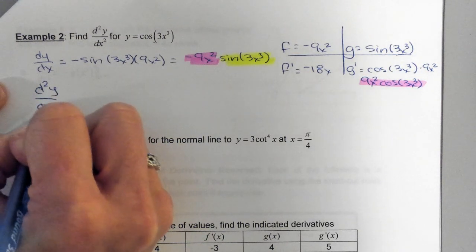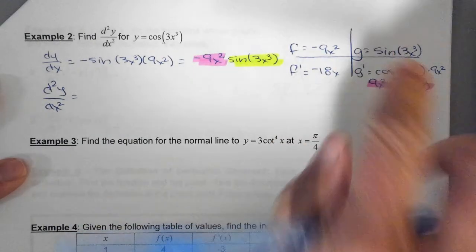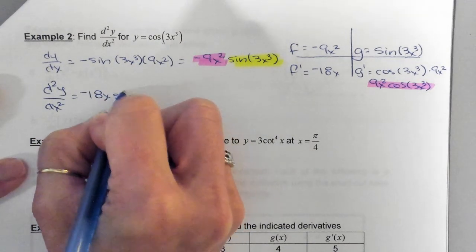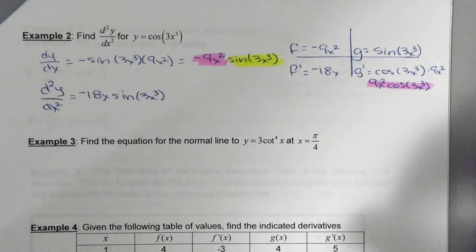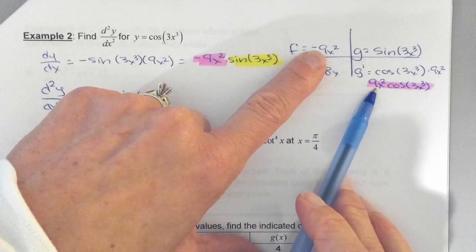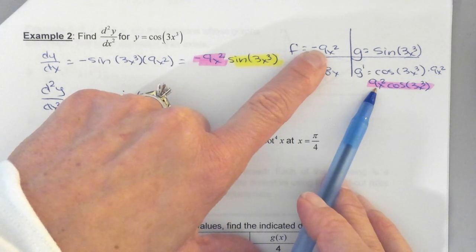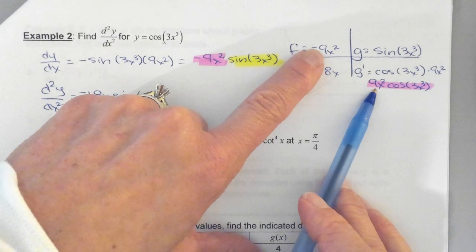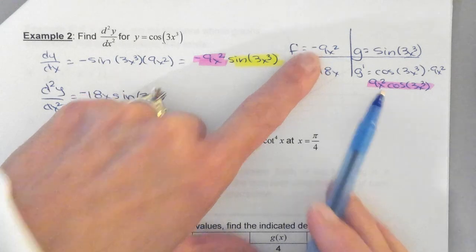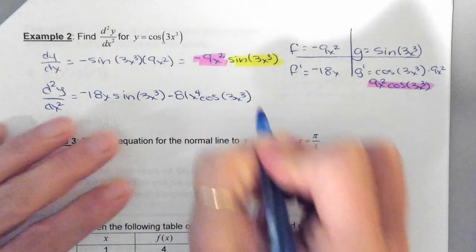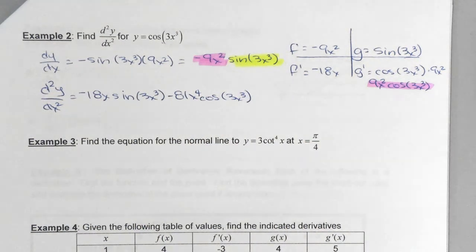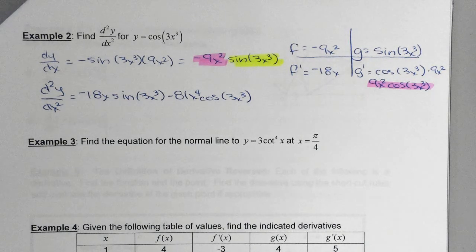Second derivative notation right here is equal to - so we've got f prime times g, which is negative 18x sine of 3x cubed. And before I write a plus, I need to look. I've got f times g prime. So this is actually going to become negative. More specifically, negative what? 81x to the fourth. And then I've got my cosine 3x cubed. I can't - I guess I could factor out something, but is it really going to help me? No. I would just leave it. You're done.